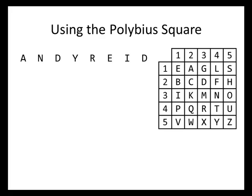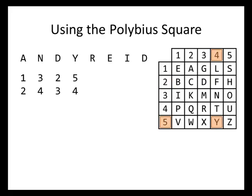We're going to look up each of these letters in our square. The first letter is A — it's in row 1, column 2. We always use the row number then the column number, and since we're encoding, we write those numbers vertically: 1 on top, then 2 underneath. Then we keep doing this: N is in row 3, column 4; D is in row 2, column 3; Y is in row 5, column 4; R is in row 4, column 3; E is in row 1, column 1; I is in row 3, column 1; and D is in row 2, column 3.